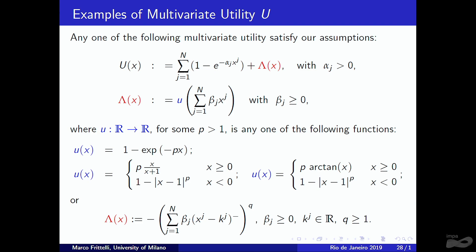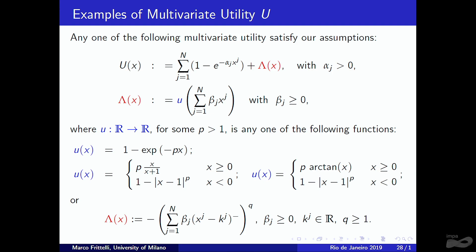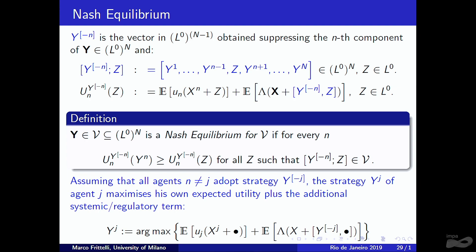Example utility functions satisfying our assumptions include: single-agent utilities depending on J, and a systemic component Δ of the form of a function of their sum — such as exponential type or power type. Additionally, since we do not require differentiability, Δ could be the power of the negative part of X, or a product XⱼXₖ with negative parts. These are valid selections for Δ.